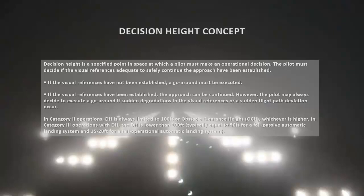However, the pilot may always decide to execute a go-around if sudden degradations in visual references or a sudden flight path deviation occurred. In Category 2 operations, decision height is always limited to 100 feet or obstacle clearance height, whichever is higher. In Category 3 operations with decision height, the decision height is lower than 100 feet — typically 50 feet for a fail-passive automatic landing system and 15 to 20 feet for a fail-operational automatic landing system.